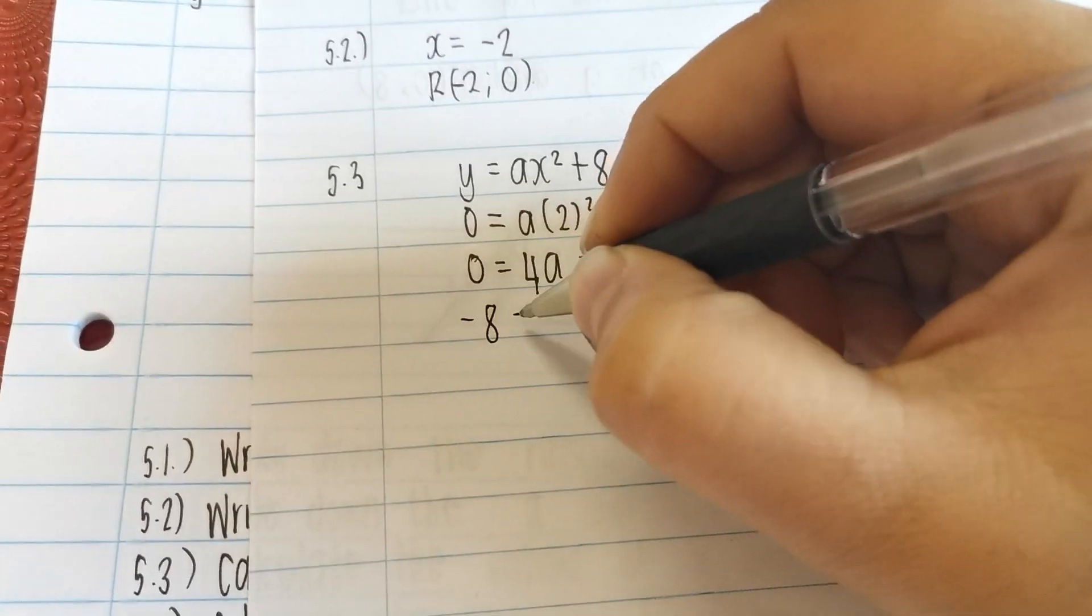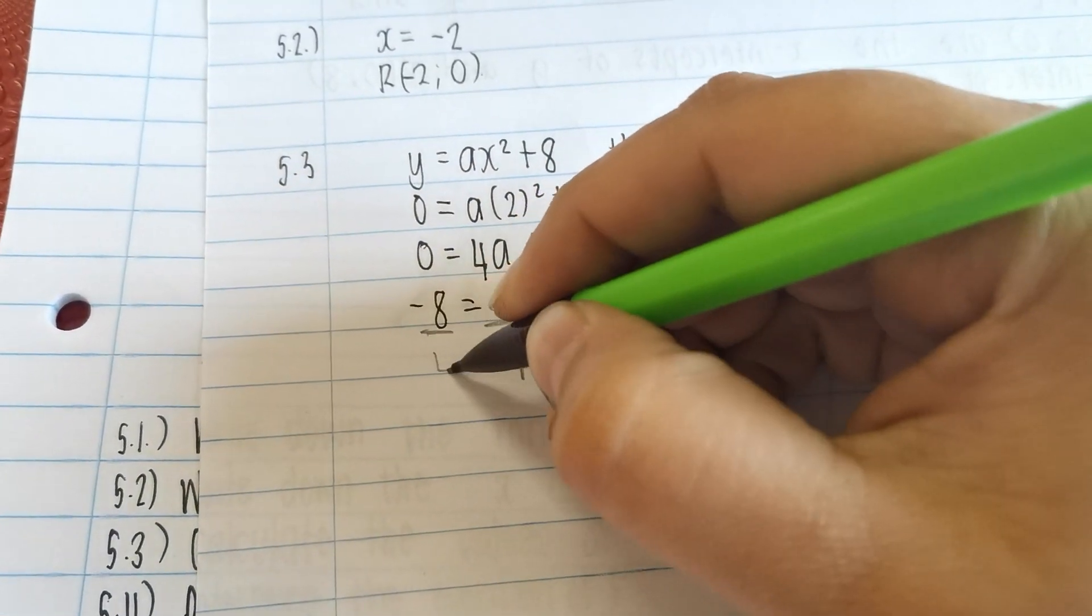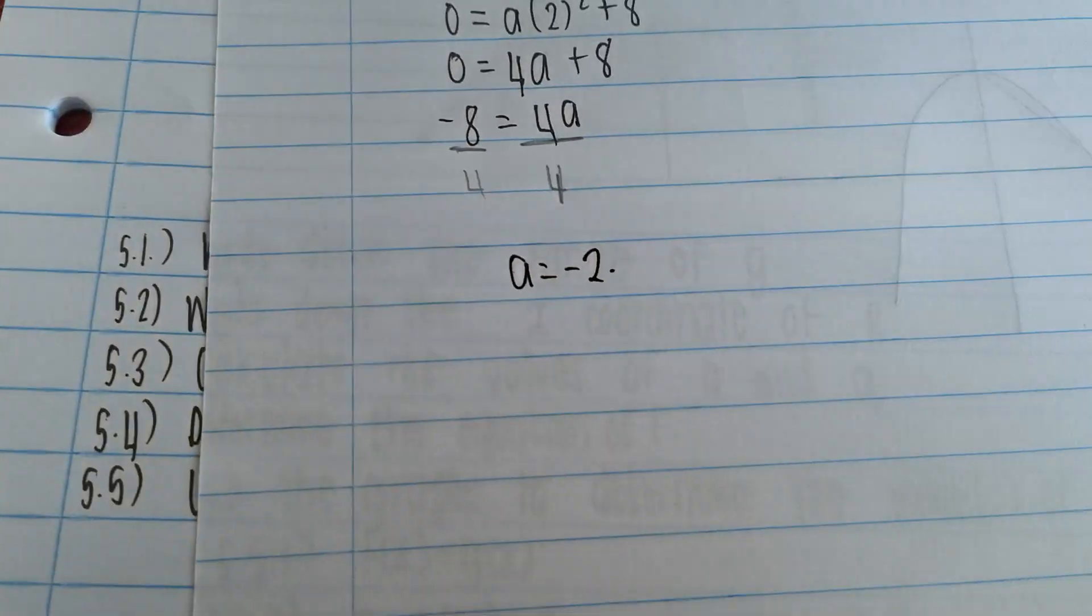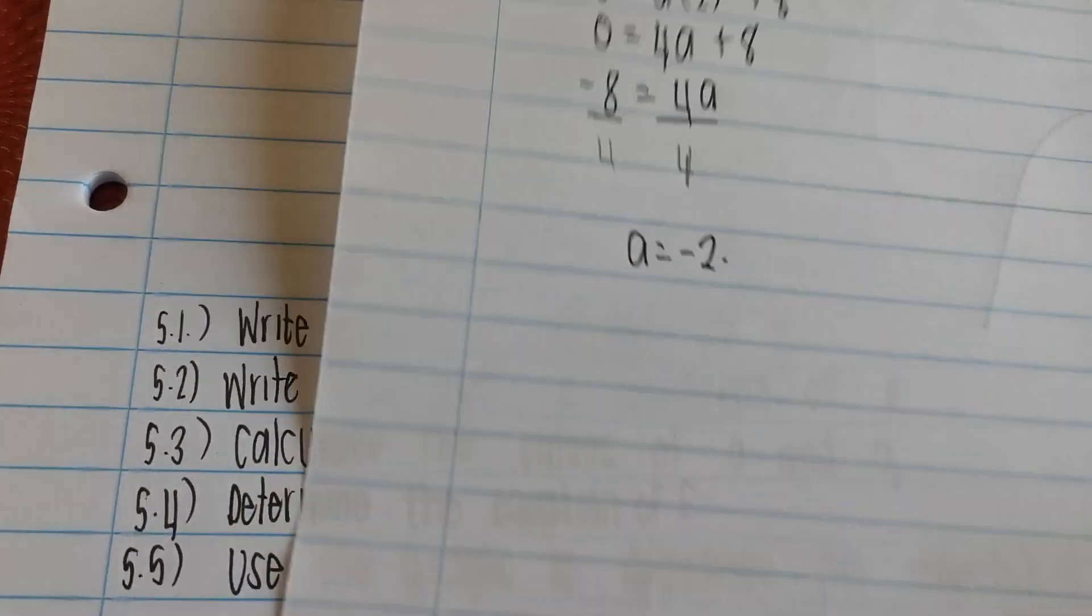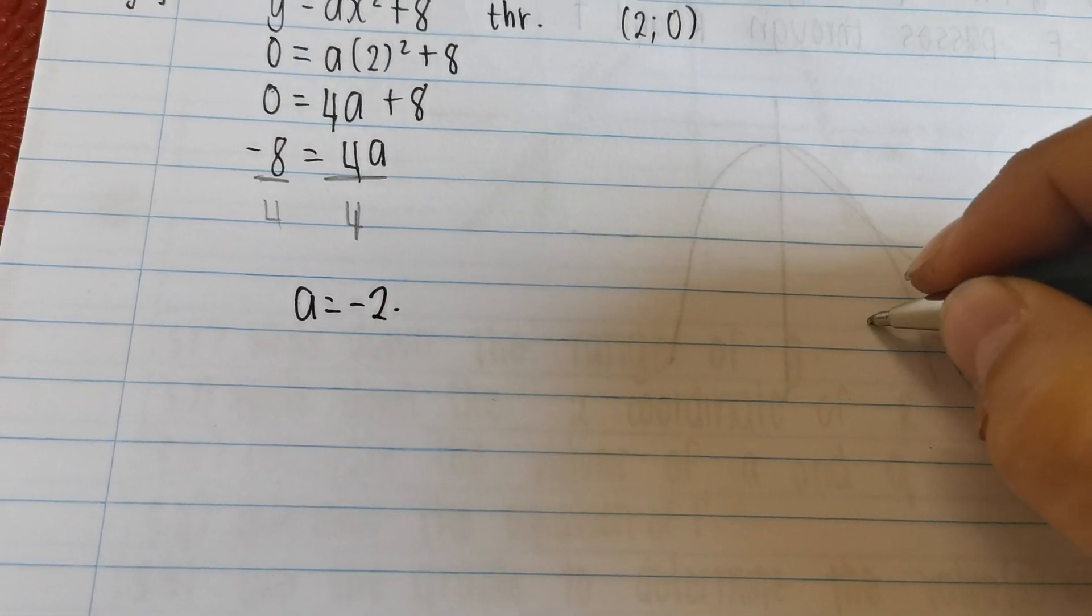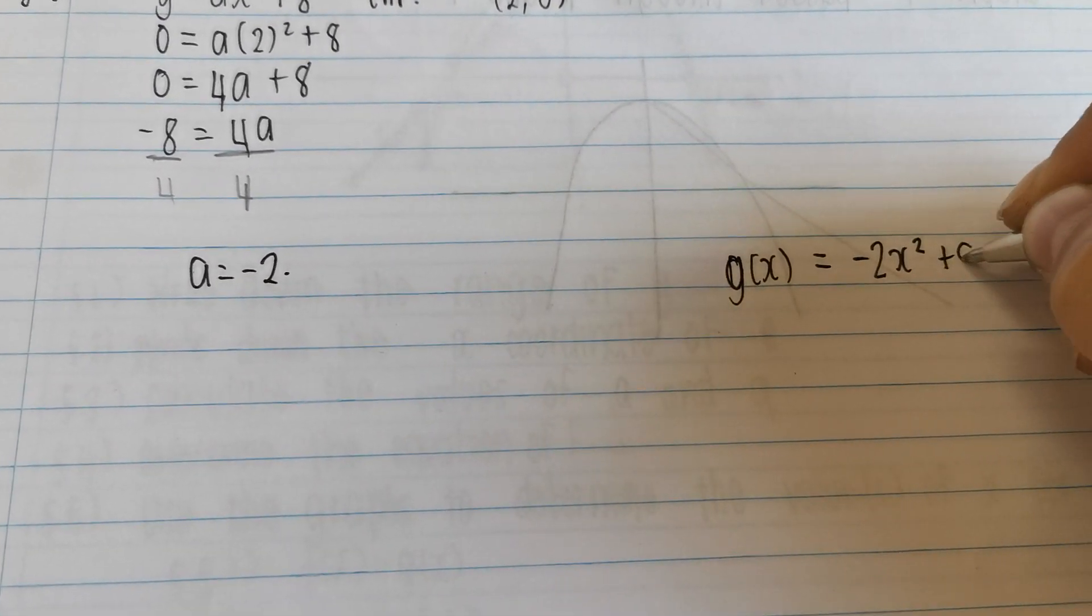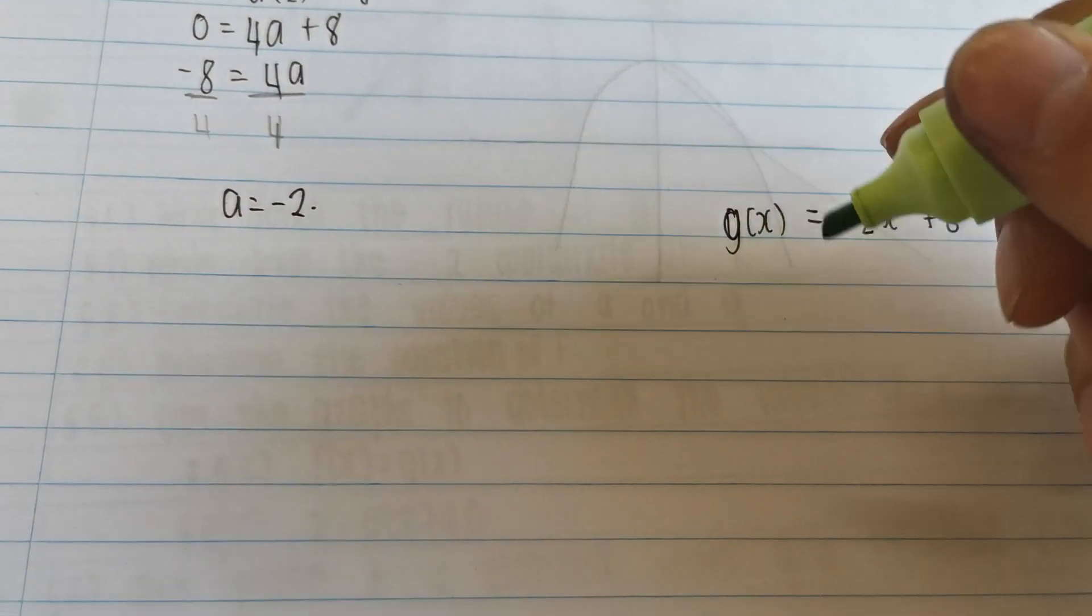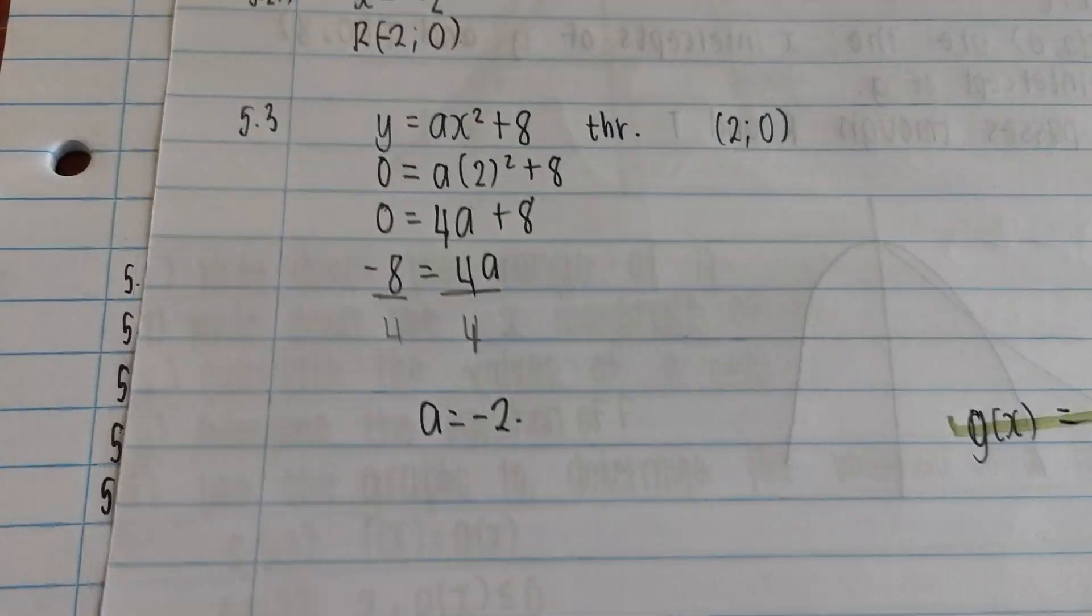So 0 equals, remember this is the x coordinate, y coordinate. So the x must fit in there. The y must fit in there. So a times 2 squared plus 8. This here is going to give me 2 squared is 4a plus 8. Bring the 8 over. Negative 8 equals 4a. Divide both sides. Divide by 4. a is actually equal to negative 2. We calculated it. Once you're done with that, even though this question didn't say write down the equation, I want you to write down the equation for yourself. So we've got now that g(x) is actually equal to negative 2x squared plus 8. Just so that in case you need it again later, you've got it. And highlight it for us in green because this was our green grass equation.